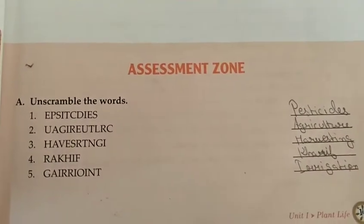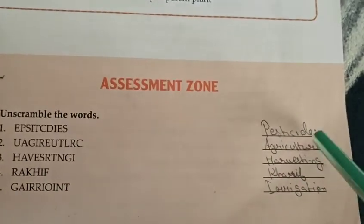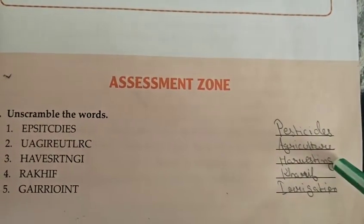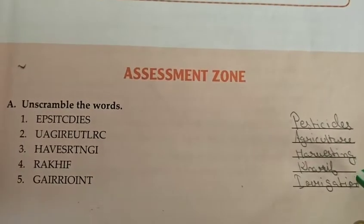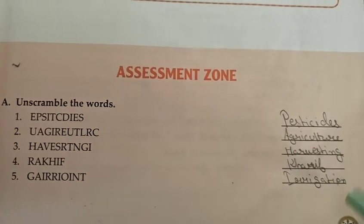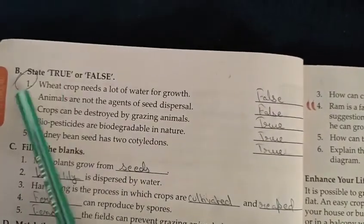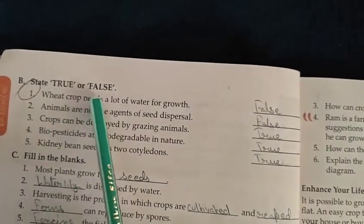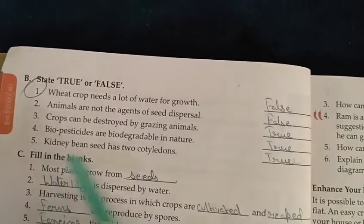Here is this chapter's exercise. Number A: number one will be pesticide, number two is agriculture, number three harvesting, number four curry, number five irrigation. Number B, state true or false: number one will be false, number two will be false.